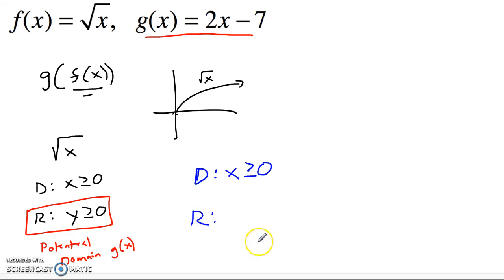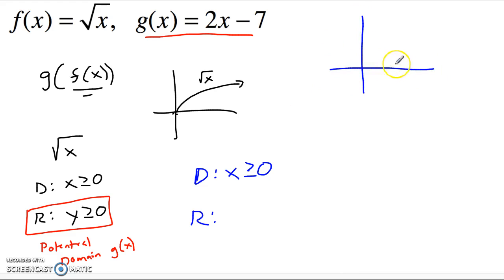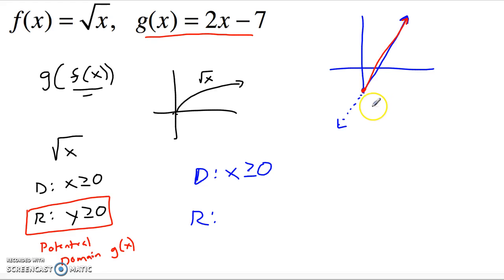What about the range of this composition? Even though 2x minus 7 is happy to take any real number as input, it's only ever going to see numbers greater than or equal to zero. If I do a quick sketch of 2x minus 7, it crosses the y-intercept at negative 7 with a slope of 2. Since the inside function never spits out a negative number, this graph never gets negative inputs — all those lower values are cut off. So we only see from negative 7 forward, giving a range of y greater than or equal to negative 7.